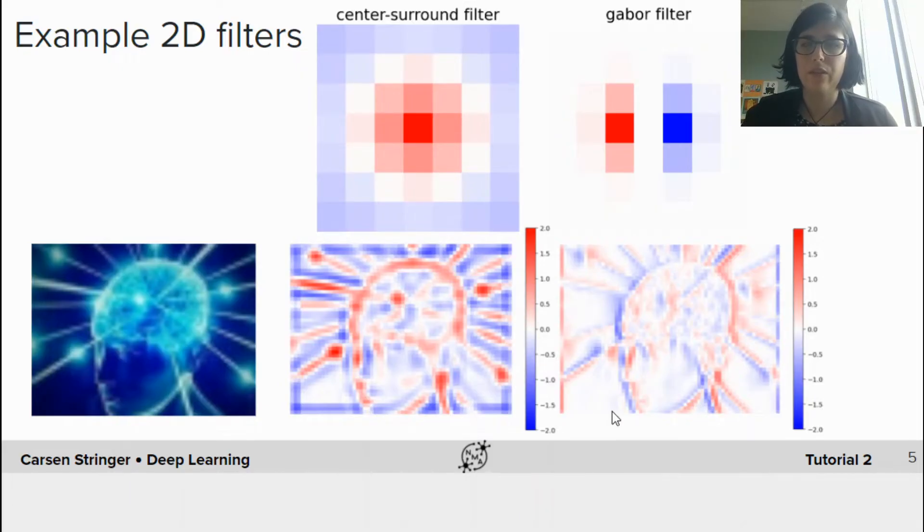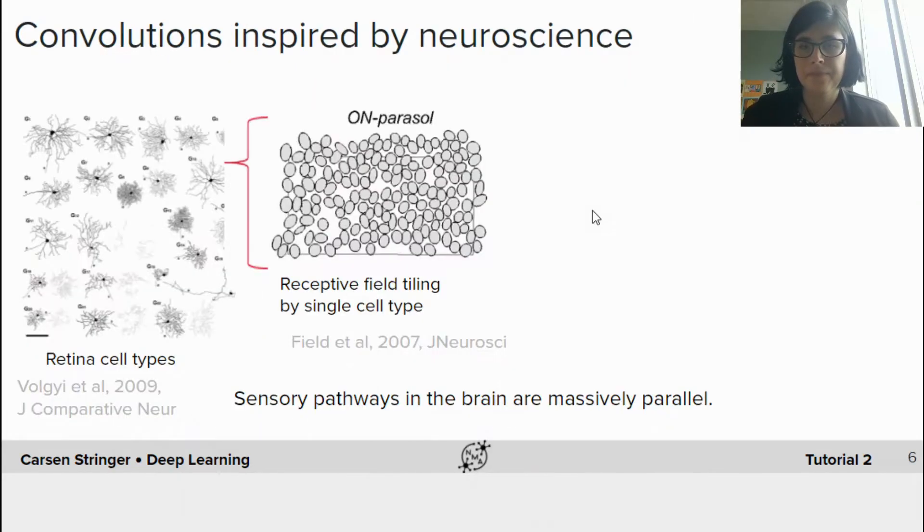So in the exercise, you'll get several outputs and you'll have to guess which filter is creating which output. All right. So in fact, I said previously, those filters were inspired by neuroscience. And in fact, convolutional layers in general were inspired by neuroscience.